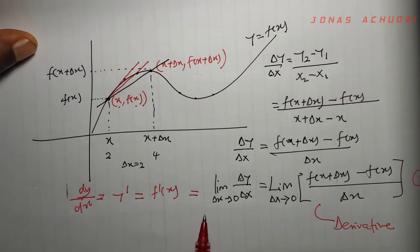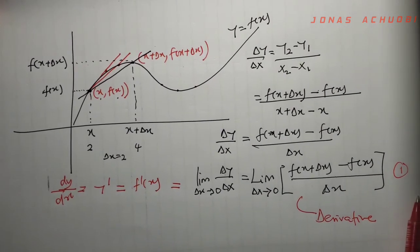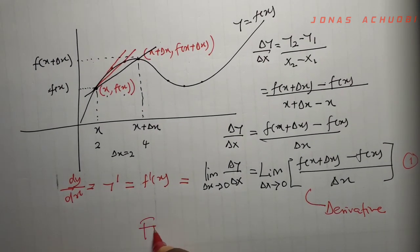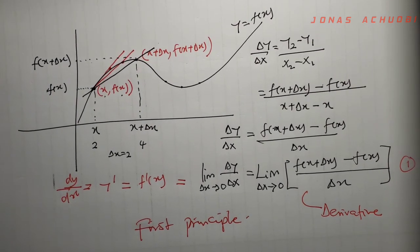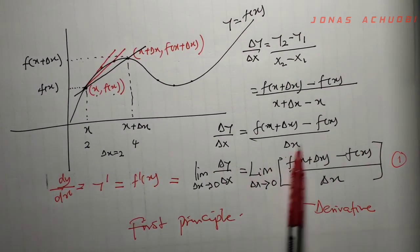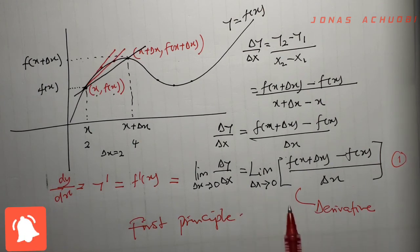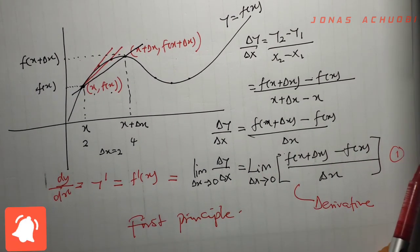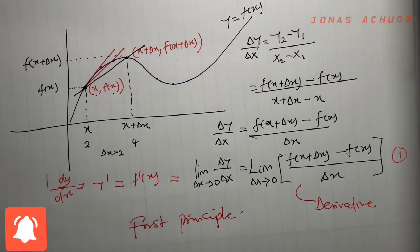When you find the slope of a particular point on a curve using this equation, we say that you have found that slope from first principle. If you evaluate this equation and you come out with a constant — a value that has no variable — it tells us that the slope found is the slope of a point on a straight line. Otherwise, if the curve is not a straight line, when you evaluate this slope, what you get will be a function of x. In our next class, we shall take one or two examples to illustrate how we find the slope of any curve from first principle.